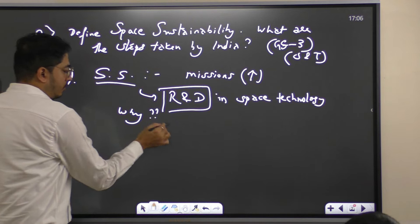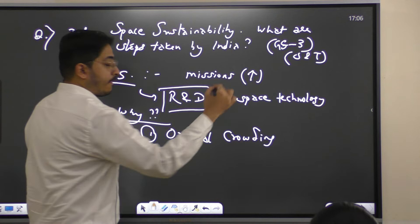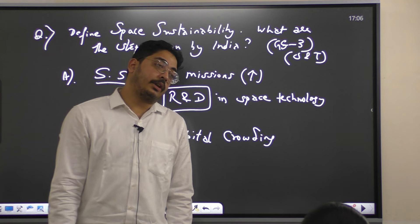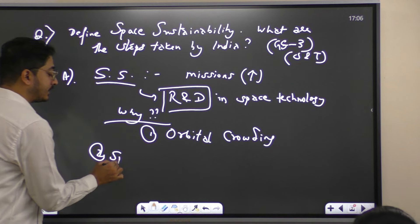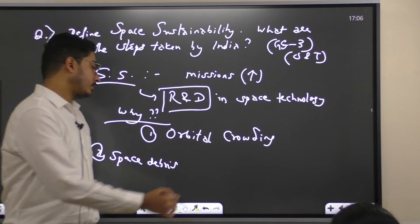Clear? So that we properly reuse satellites. For that we need proper studies, proper research, proper development in space technology. Now, why space sustainability? Number one: orbital crowding. Orbit is totally crowded now. Second point is space debris. Orbital crowding has happened, so space debris will also increase.